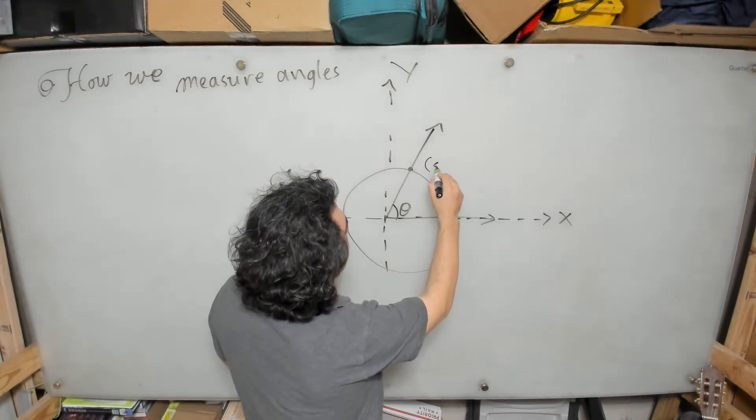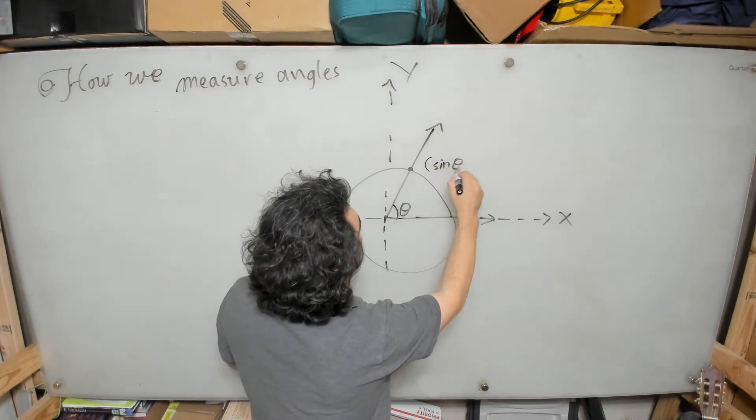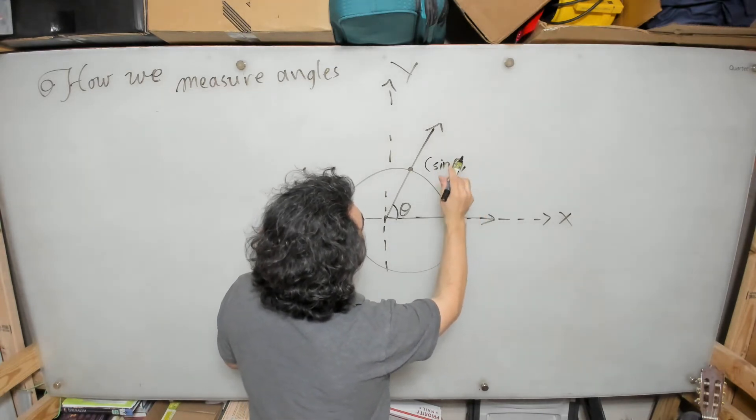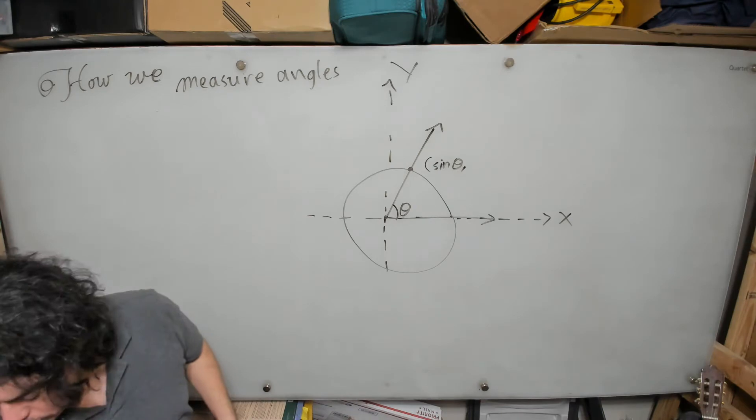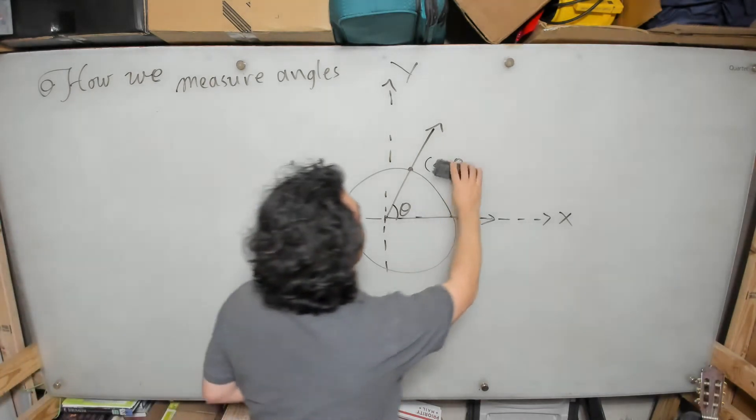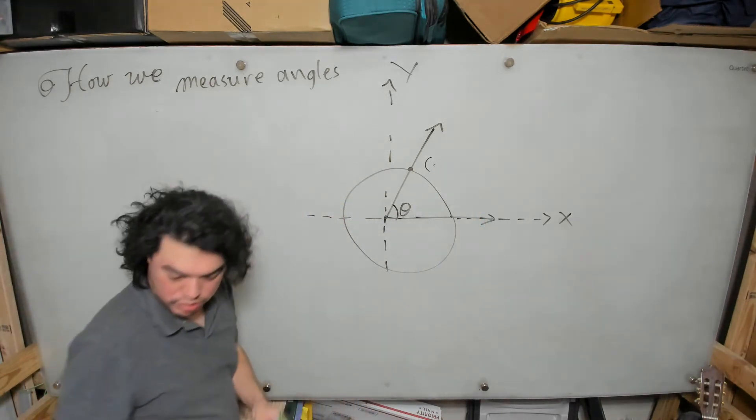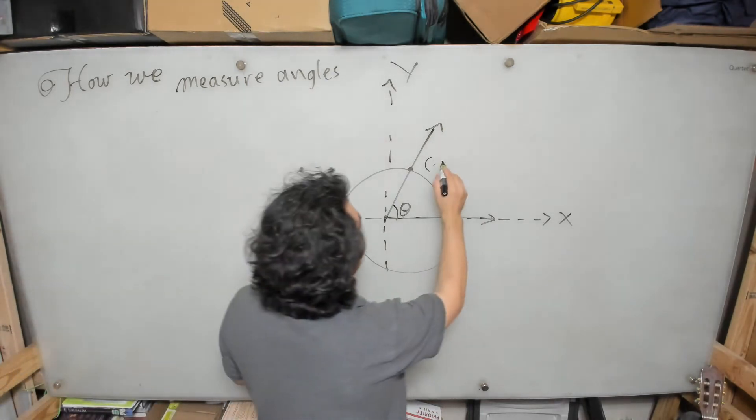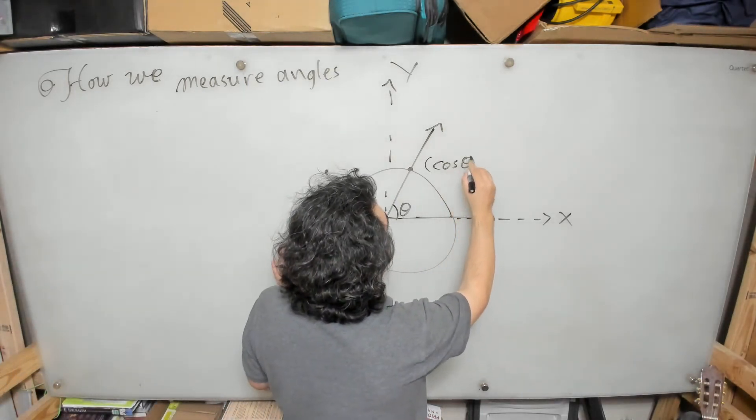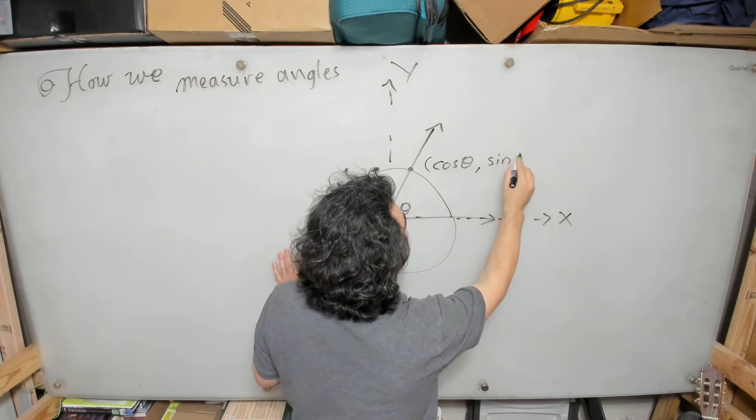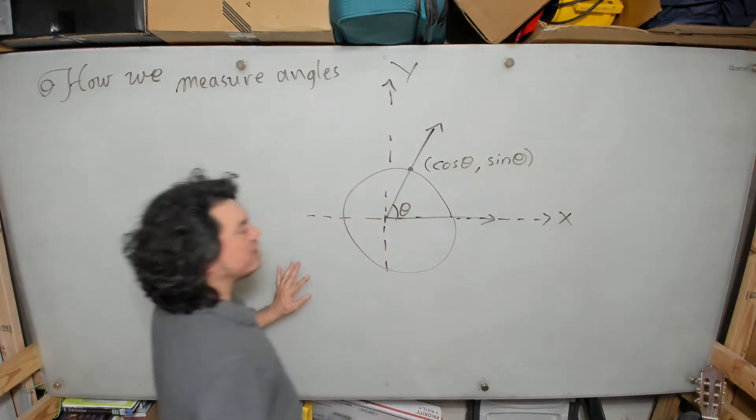We can, in fact, since we're assuming this is a unit circle, we can in fact say that the x-coordinate is the sine of theta—I mean, I'm sorry, not the x-coordinate—the y-coordinate. The x-coordinate is the cosine of theta.